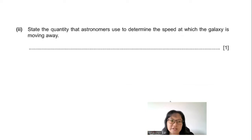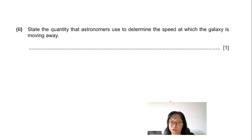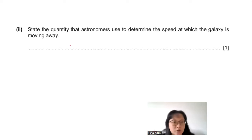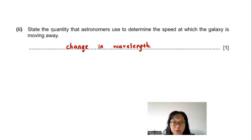Part B2: State the quantity astronomers use to determine the speed at which the galaxy is moving away. Astronomers look at the change in wavelength — whether it shows a red shift or a blue shift — to determine the speed.